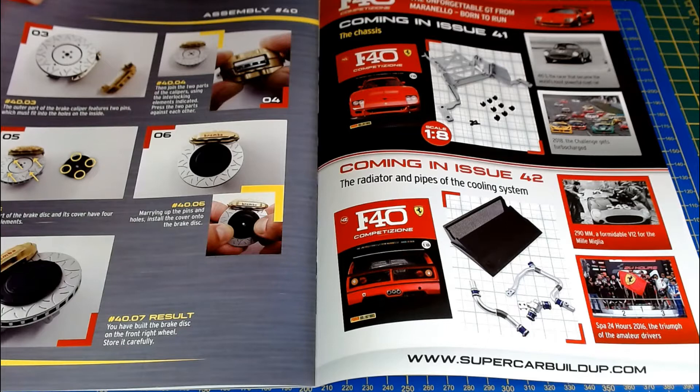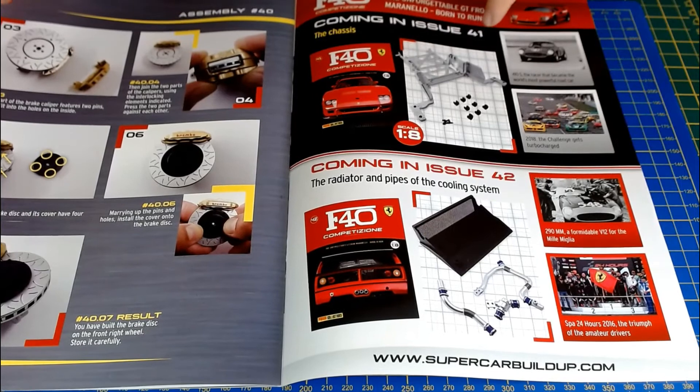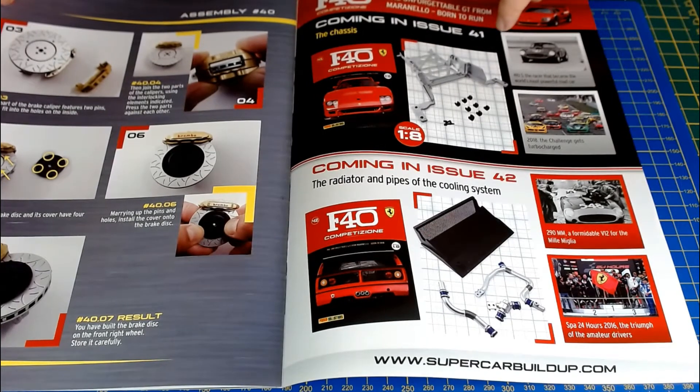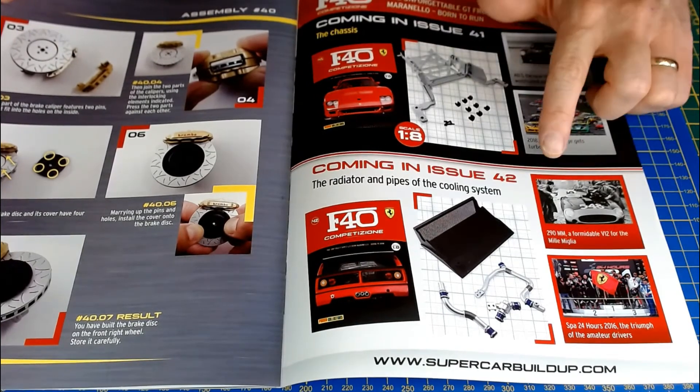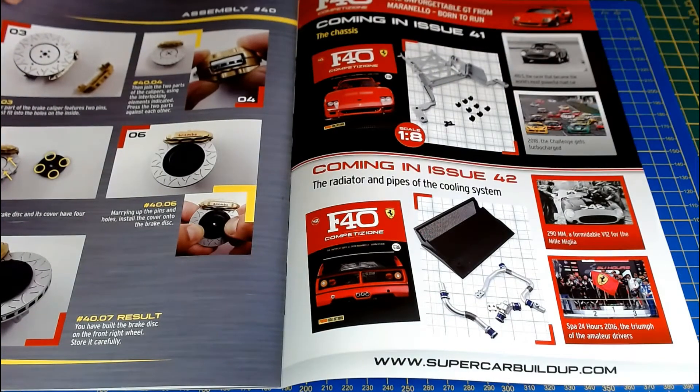Just looking at what we're getting in 41 - we're getting the chassis, so it might be quite a big subscriber's pack this time because of the chassis and then the radiator pipes cooling system in 42. It might be quite a big one because you're going to get the main chassis part.